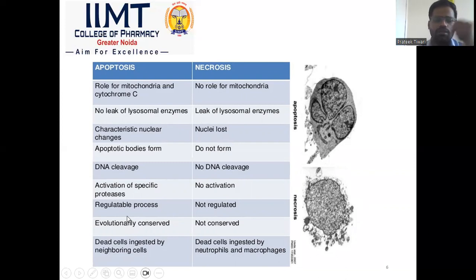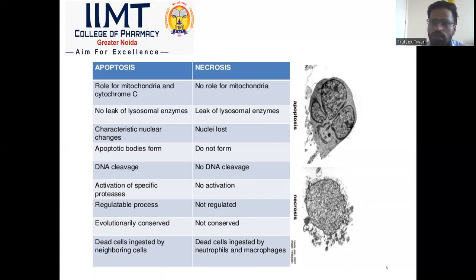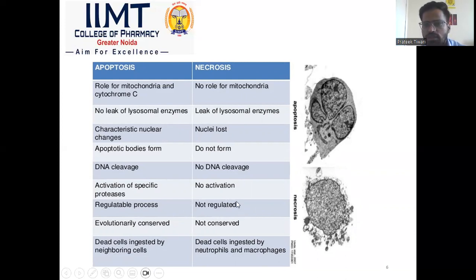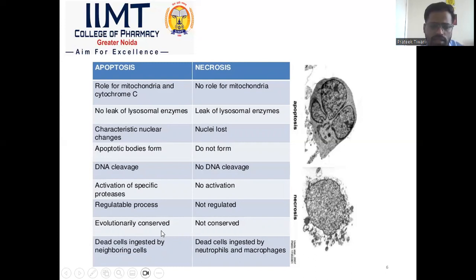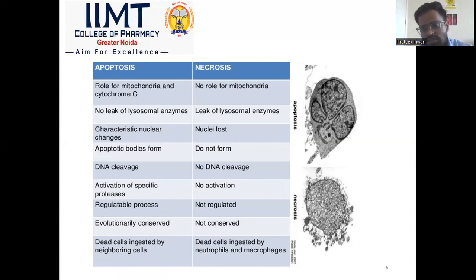Apoptosis is regulatable because everything happens through signaling, so the body can regulate this process according to requirement. But in necrosis there is no regulation — it is a kind of immediate injury due to trauma and physical and chemical agents. Apoptosis is evolutionarily conserved, but necrosis is not. The last difference is that dead cells are ingested by neighboring phagocytic cells in the case of apoptosis.